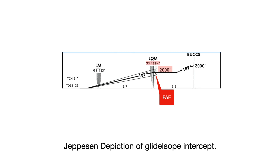If you're wondering what that glide slope altitude GS1984 is, that's the altitude that you should depict on your altimeter when you are on the glide slope at the outer marker. So that's the outer marker altitude on the glide slope.